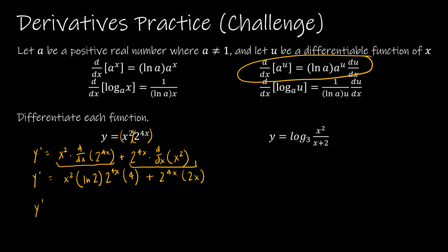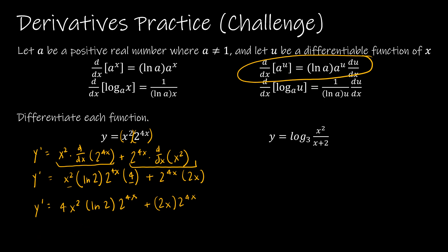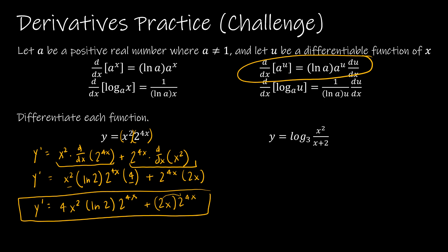From here, I write the 4 and x² together: 4x² natural log of 2 times 2^(4x), plus 2x times 2^(4x). You could factor out 2x and 2^(4x), but it doesn't make the solution much prettier. You could also combine the 2 to get 4x plus 1 in a factor, but again it's not really helping, so I'll leave the solution as is.